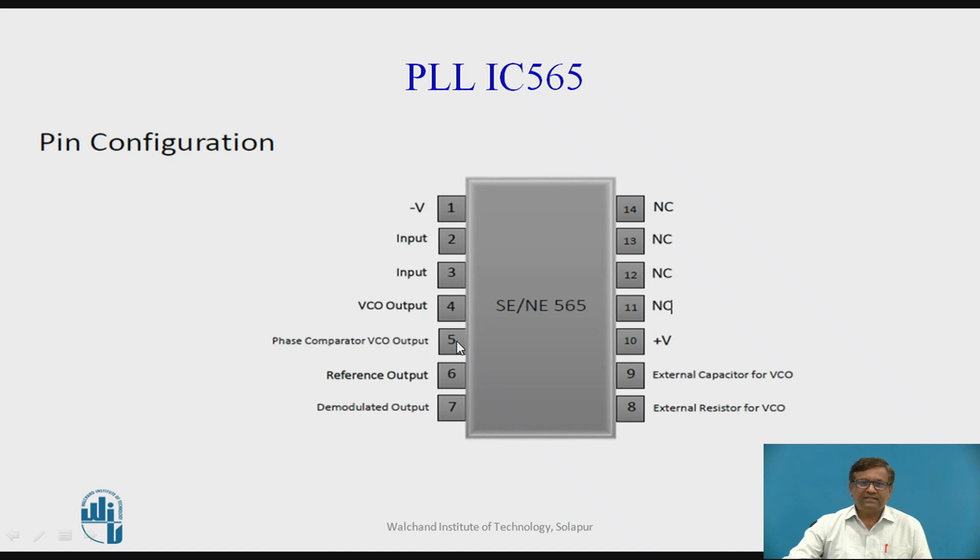Pin number 5 is phase comparator VCO output, 6 is a reference output, 7 is a demodulated output, 8 and 9 are used to connect the external components for the VCO, 10 is the positive voltage for working of the IC and the rest of the pins are not connected.